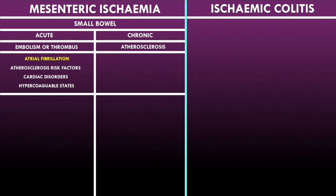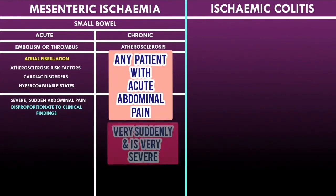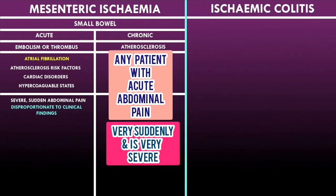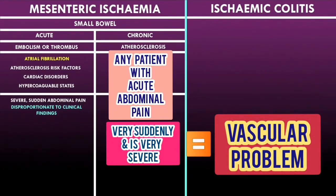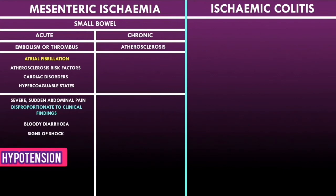Patients with acute mesenteric ischemia typically present with severe sudden abdominal pain, and the key feature is that this pain is disproportionate to clinical findings — examination findings are often unremarkable. Severe sudden onset abdominal pain is highly suggestive of a vascular problem such as acute mesenteric ischemia. Patients also present with bloody diarrhea, and due to the high risk of bowel perforation there can be signs of shock including tachycardia, hypotension, dehydration, and low urine output.